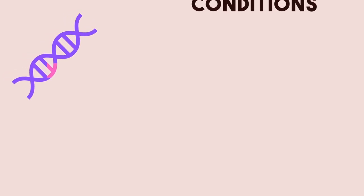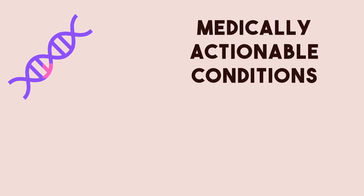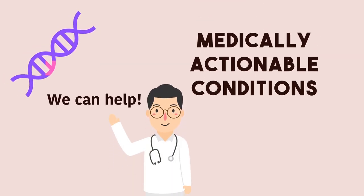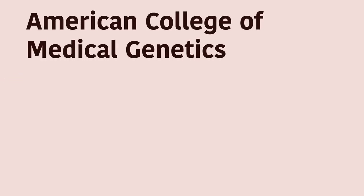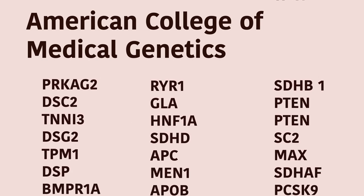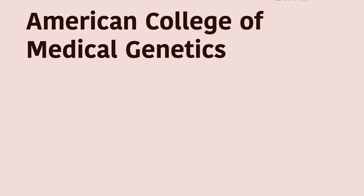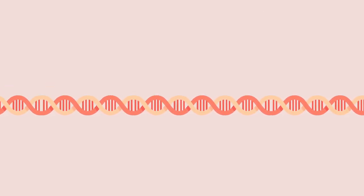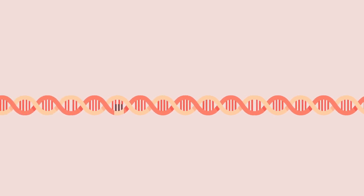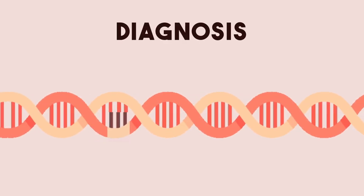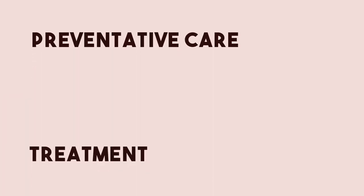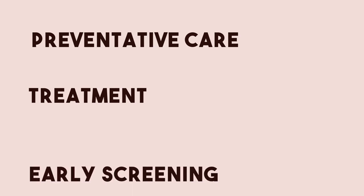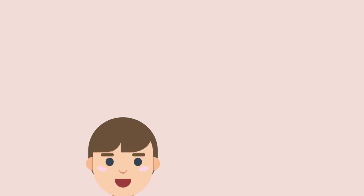Secondary findings are variants found in genes that are associated with medically actionable conditions, meaning there is something doctors can do to help. The American College of Medical Genetics released a list of 73 genes that have been linked to health conditions that have established medical or therapeutic interventions. This can include preventative care, effective treatment options, and even early screening.